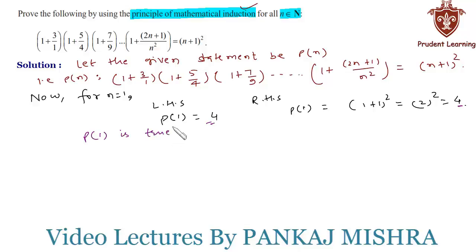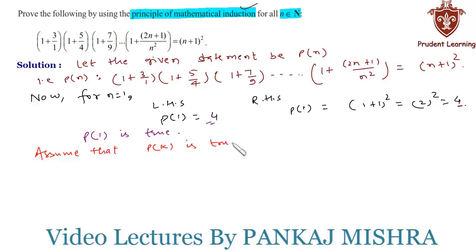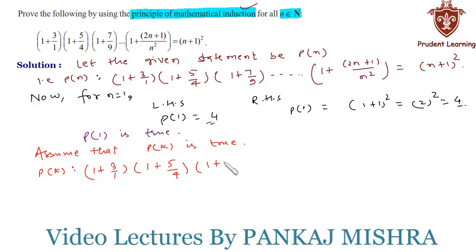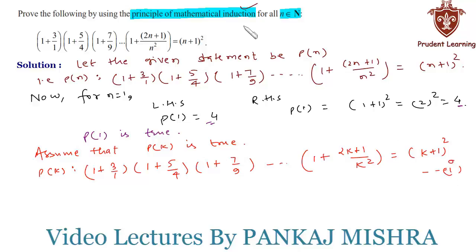In our second step, we'll assume that P(k) is true for some positive integer k. That is: (1 + 3/1) × (1 + 5/4) × (1 + 7/9) × ... × (1 + (2k+1)/k²) = (k+1)². Let us call this equation 1.